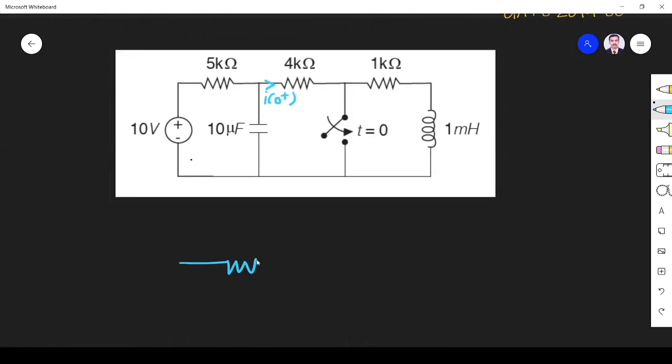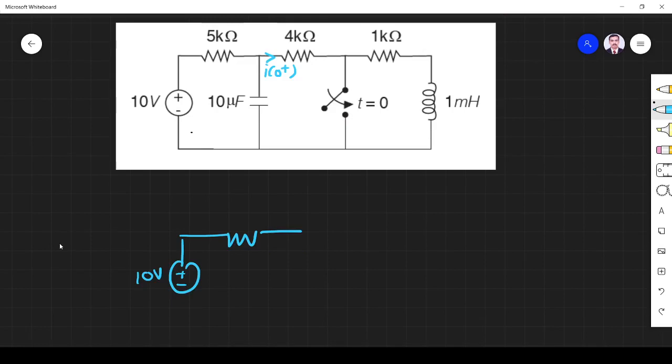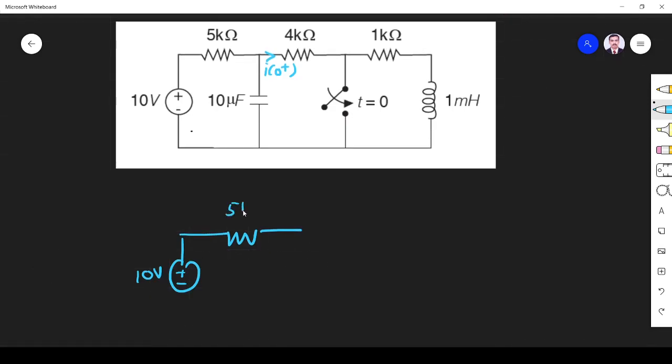The circuit has a 10V source, 5 kilo ohm, 4 kilo ohm, and 1 kilo ohm resistors, a 10 microfarad capacitor, and a 1 millihenry inductor. The switch is closed.